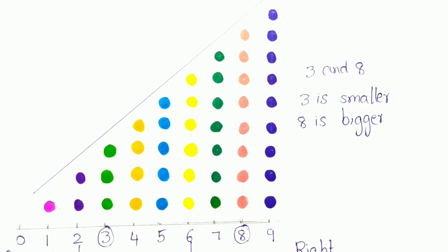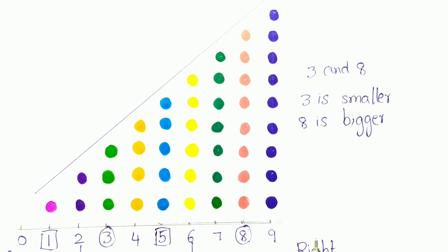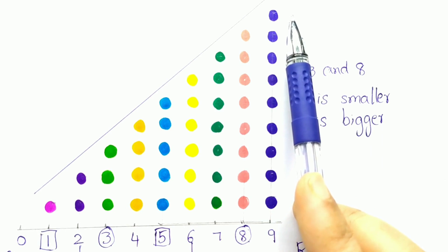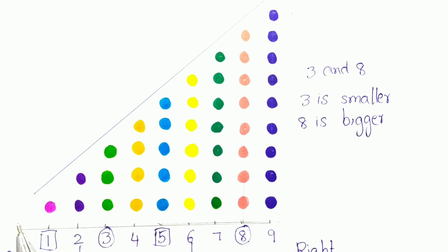Let's take 1 and 5. See, in these two numbers, which one is on the left side? 1 is on the left side and 5 is on the right side. So the left side number 1 is the smaller number, and the right side number 5 is the bigger number. The left side number is smaller and the right side number is bigger. When moving from left to right, numbers become bigger.